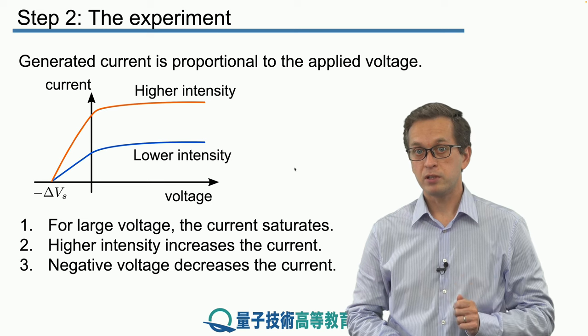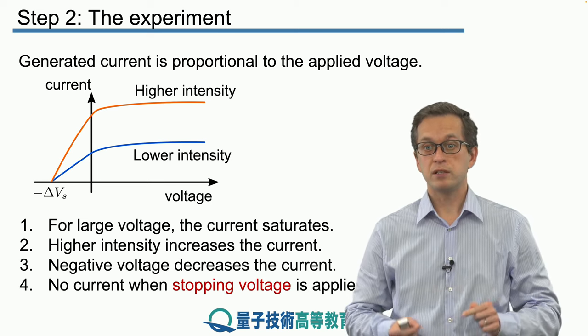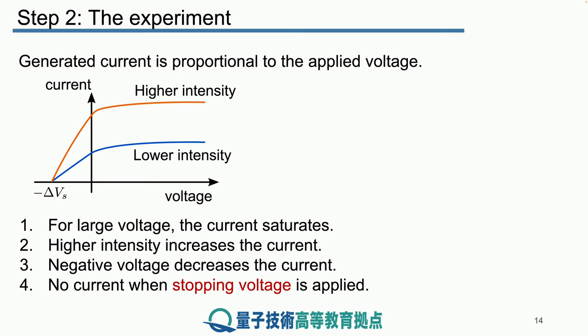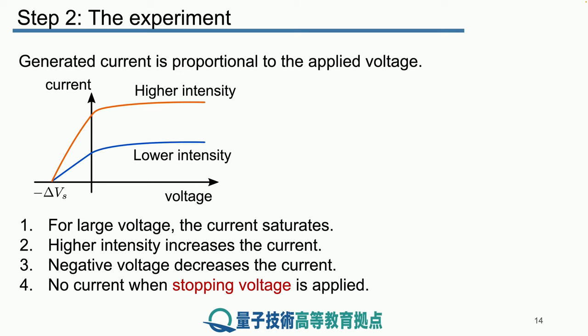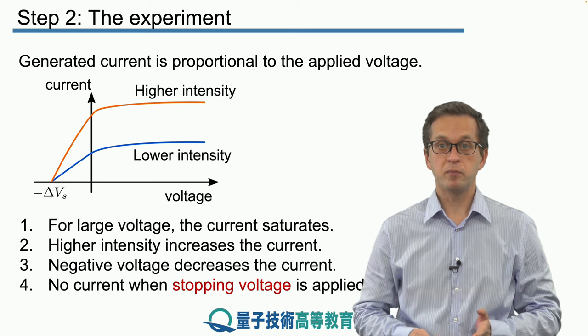And in fact, if we increase the voltage too much into the negative region, we would reach what's known as the stopping voltage, meaning all of the photoelectrons were being stopped before reaching the collector plate C, resulting in no current measured by the ammeter.